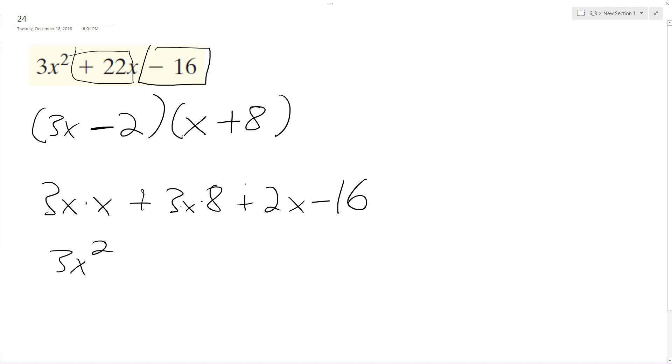So positive, and this is a negative 2x. Everything else stays the same. Alright, so positive 24x minus 2x is positive 22x, and then we get minus 16. And this matches up.